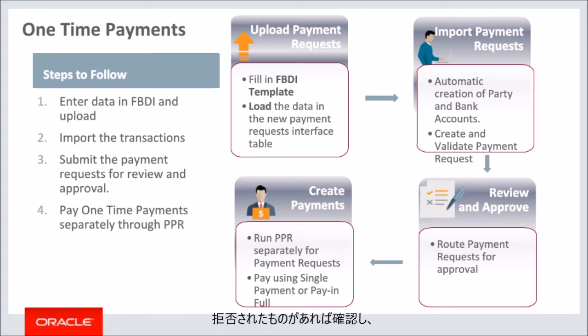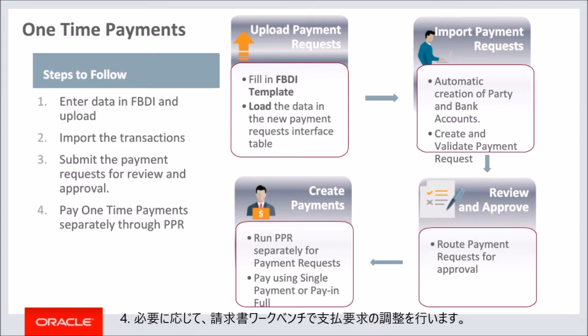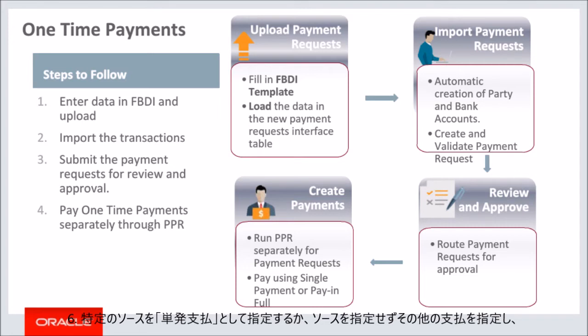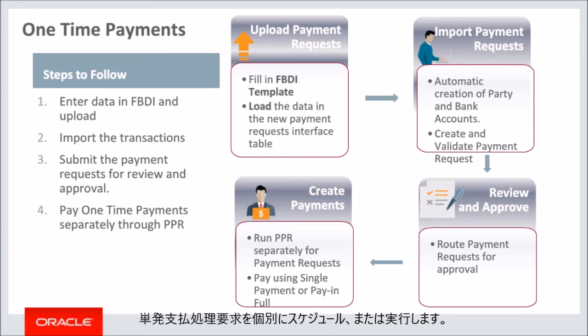Check for rejections if any. Correct the rejected transactions and resubmit them. Make adjustments to payment requests in invoice workbench if required. Get the payment requests approved if required as per the approval rules defined. Schedule or run payment process requests for one-time payment requests separately by specifying the source as one-time payments, or along with other payments by not specifying any source.